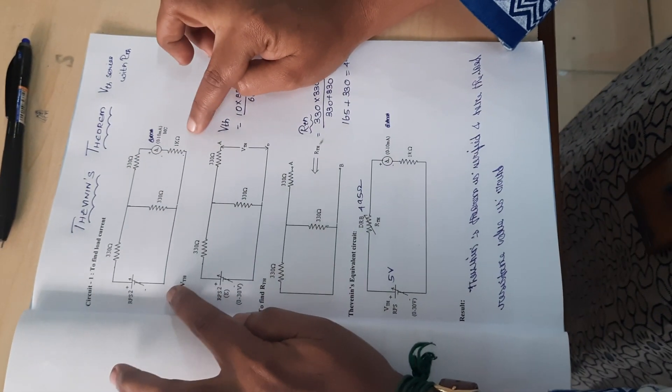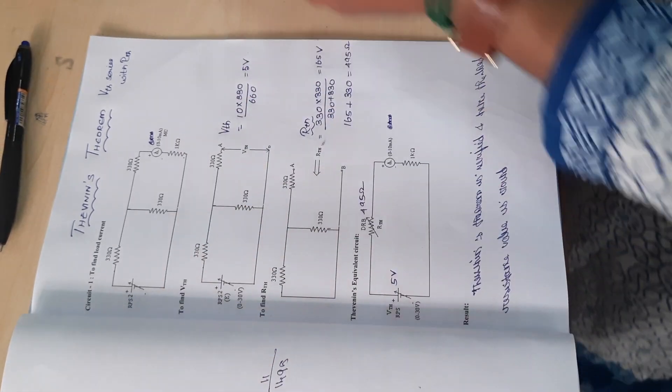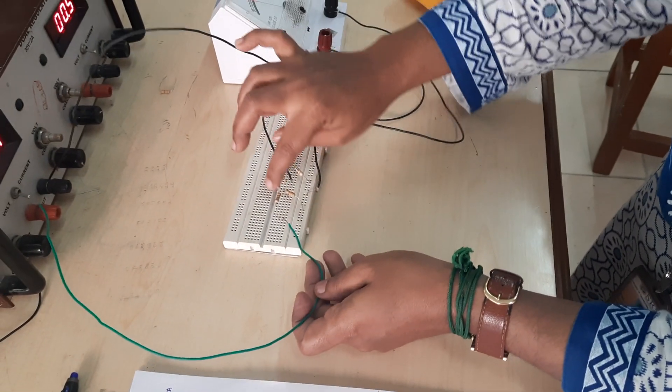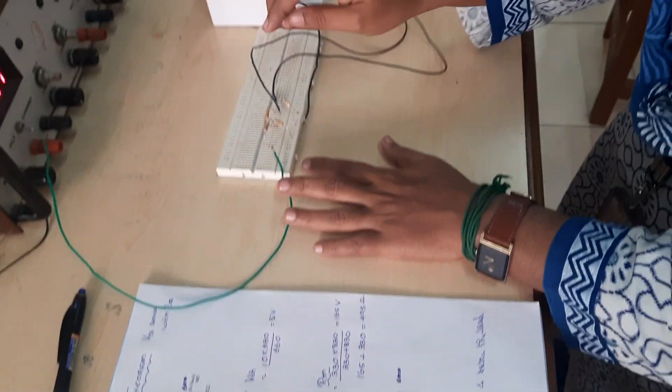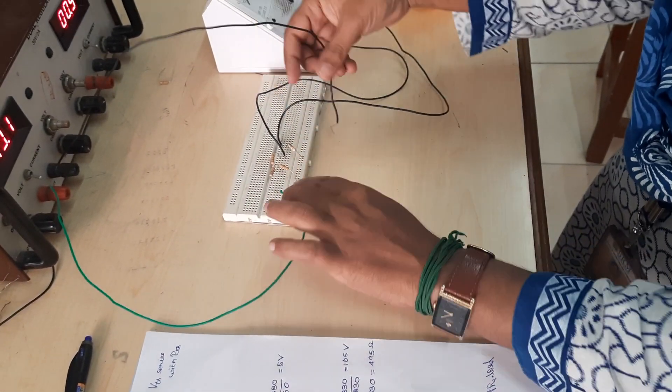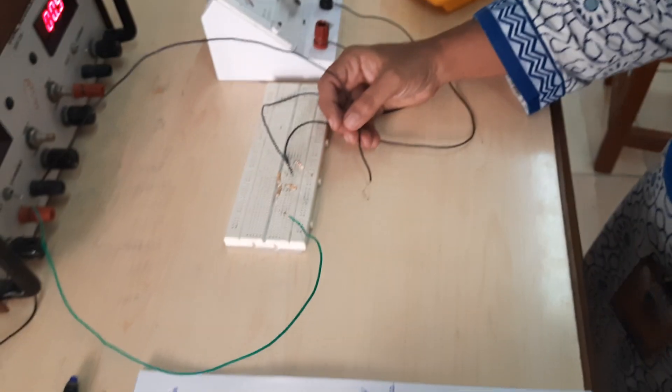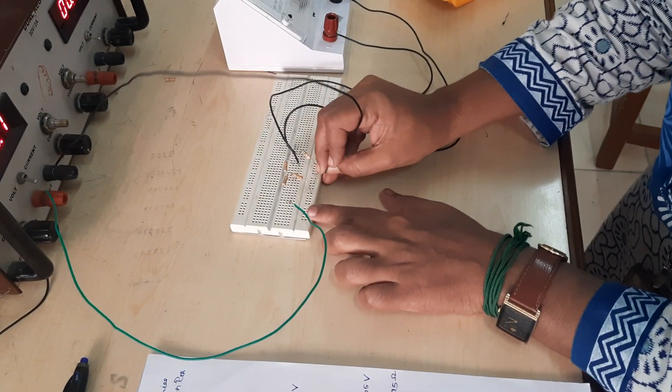This is the given circuit. We will see the circuit connections. You have the RPS. From the positive terminal of the RPS, three 330-ohm resistors are connected. The positive of the RPS is given here, and the negative of the RPS is grounded.